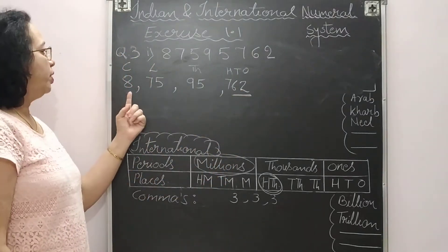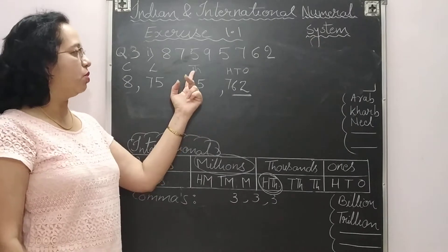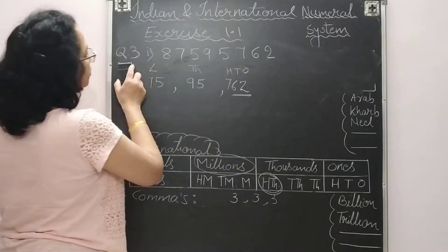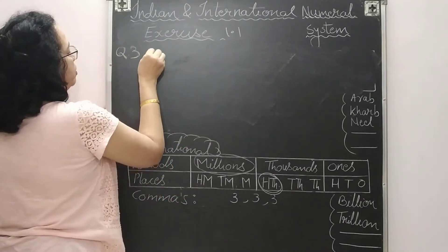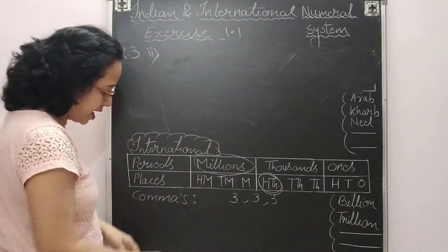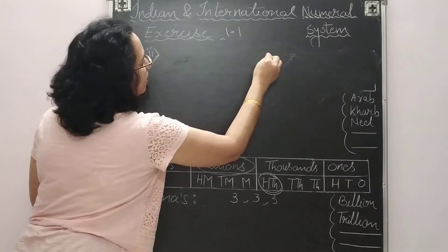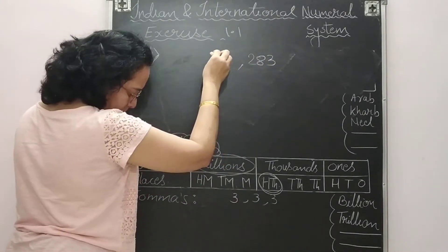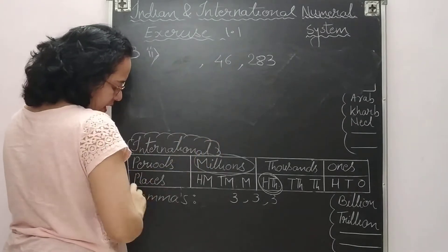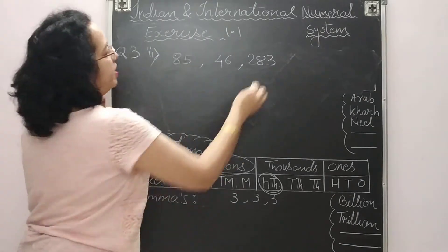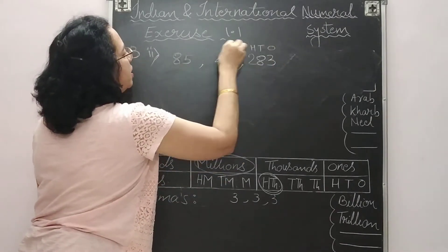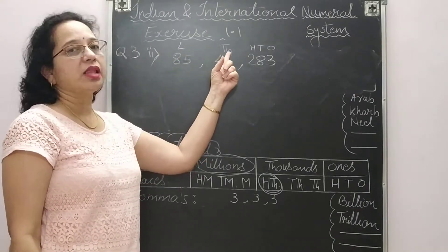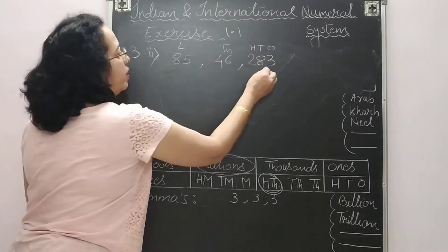Now identifying the places — ones, tens, hundreds, this is your thousands place, this is your lakhs, and this is your crores. So we write: eight crores, seventy-five lakhs, ninety-five thousand, seven hundred sixty-two.